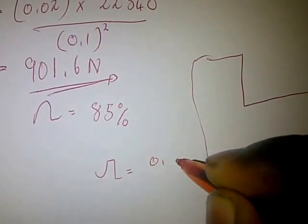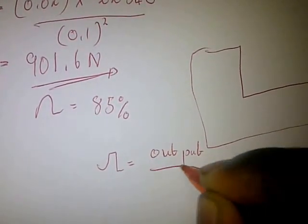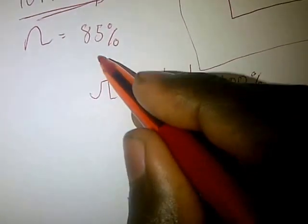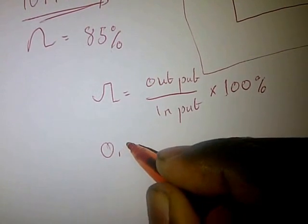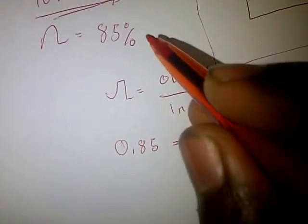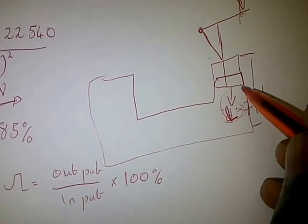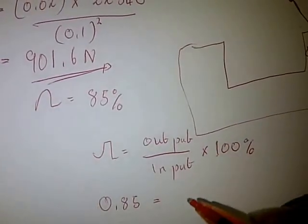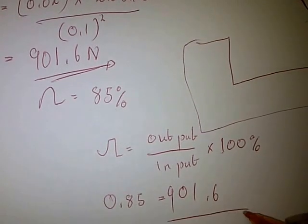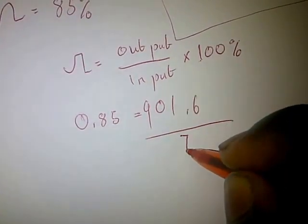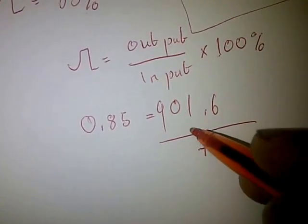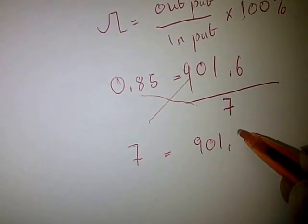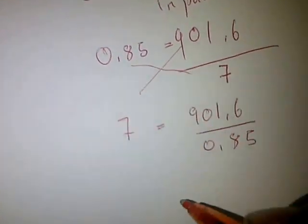Using the formula: efficiency equals output over input multiplied by 100 percent. So 85 divided by 100 gives 0.85, which equals the force on the plunger — 901.6 Newtons — divided by the force on the lever. Cross-multiplying gives F-lever equals 901.6 divided by 0.85.